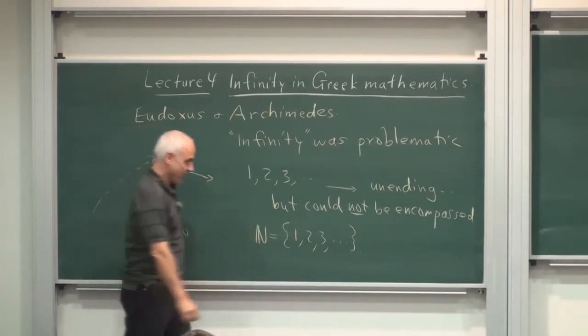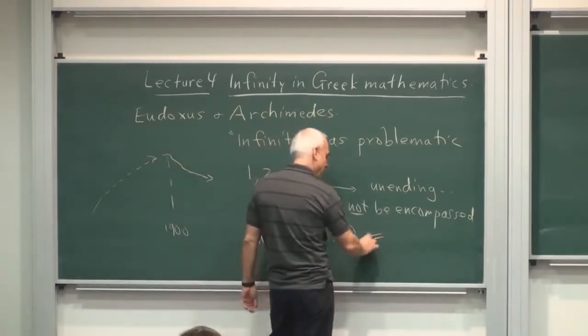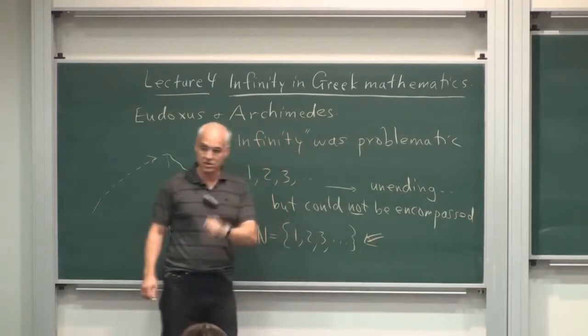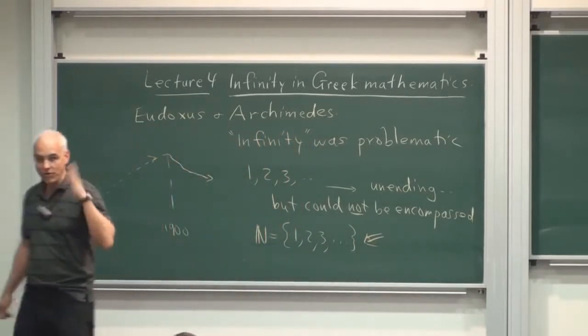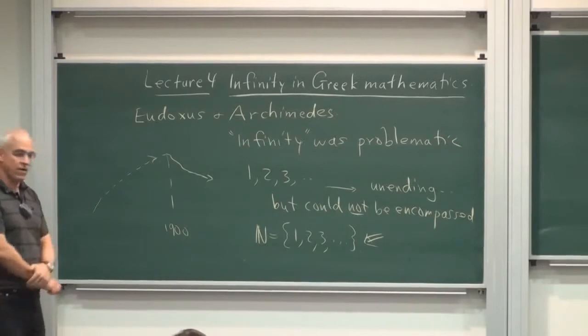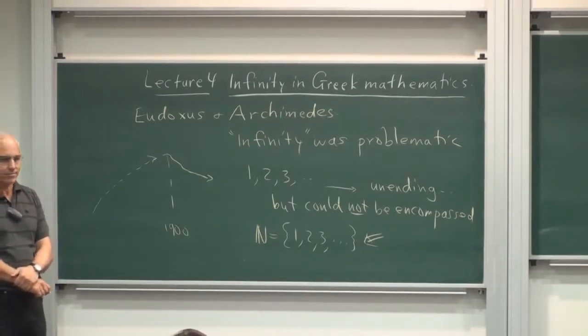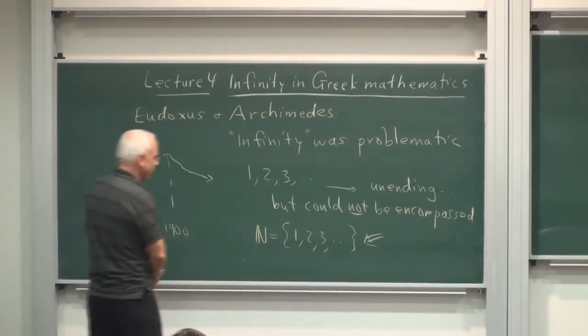So these days, we think this is an acceptable thing, but for most classical mathematicians, not just Greek mathematicians, but also Euler, Newton, Gauss, all the great mathematicians, they would have looked at this with deep suspicion. They would not have accepted this.